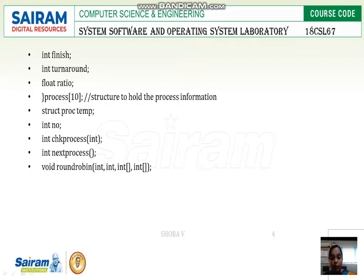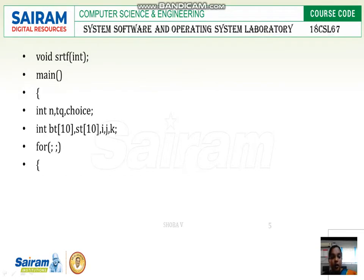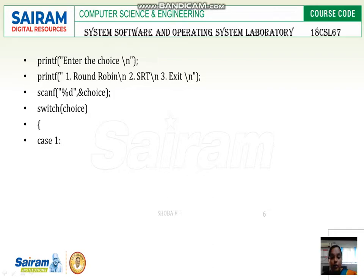This structure is used to hold the process information. In the main function we have variables: int q, choice, burst time, waiting time, and i, j, k. Using a for loop, we print a schedule menu: round robin, shortest remaining time first, and exit. If the user presses one we get round robin output; if they choose the second option, we get shortest remaining time first.